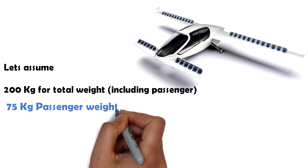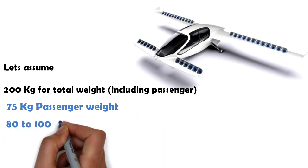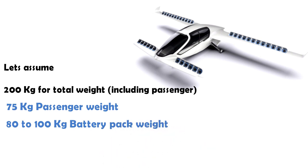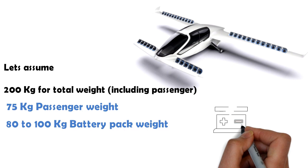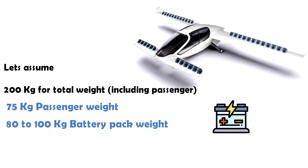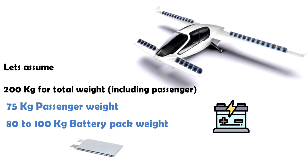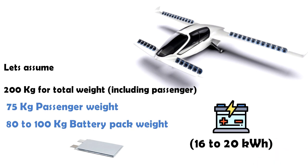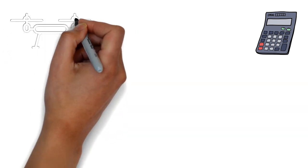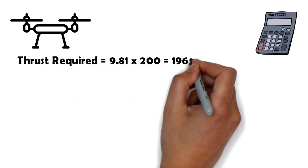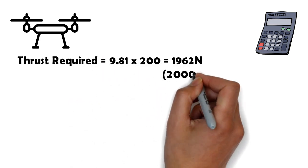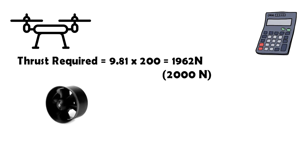So having assumed the eVTOL aircraft to be able to carry a single passenger, the weight of the aircraft itself including the motor and the batteries comes out to be 125 kilograms. This way we can set aside almost 80 to 100 kilograms of weight for the battery pack. Now given that the battery pack energy density is about 200 watt hours per kilogram, we can have a battery pack of almost 16 to 20 kilowatt hours. This value of battery pack capacity is reasonable and can even furnish a flight time of an hour if the aircraft has an efficient design. So with 200 kilograms of weight in total we would require at least 200 times 9.81, or 1,962 newtons, or approximately 2,000 newtons of thrust force.